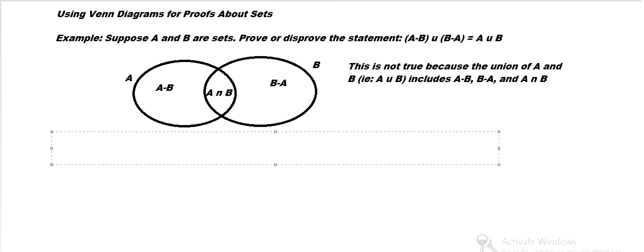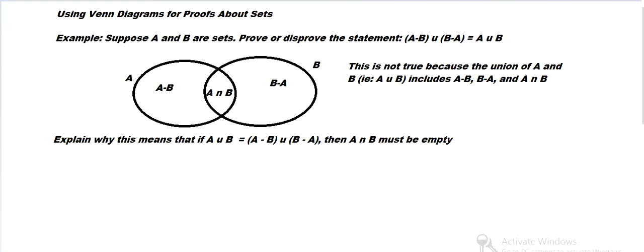So that should be pretty clear from what we saw before. Because if A union B includes A minus B, B minus A, and the intersection. So if the union is just A minus B and B minus A, then that means there's nothing in the intersection. So the intersection must be empty.